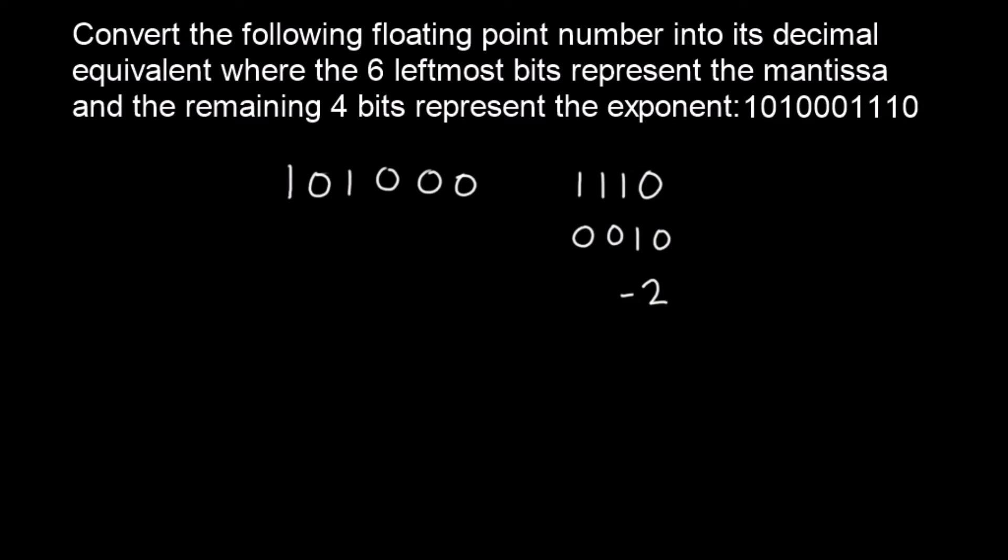Next we're going to apply two's complement to the mantissa, so that gives us 011000. We need to put in the imaginary point there. Now, because it's -2, we move the point to the left, not to the right. We need to move two hops to the left, so let's write down a couple of zeros on the left hand side: one, two.